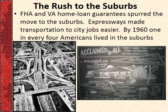The FHA and VA home loan guarantees made it very attractive to move out of your parents' house or an apartment in the city and out to the suburbs — especially after Eisenhower builds the expressways, which we'll talk about next chapter. Expressways made it possible to live 30 or 40 miles away from your job and still get there every day.